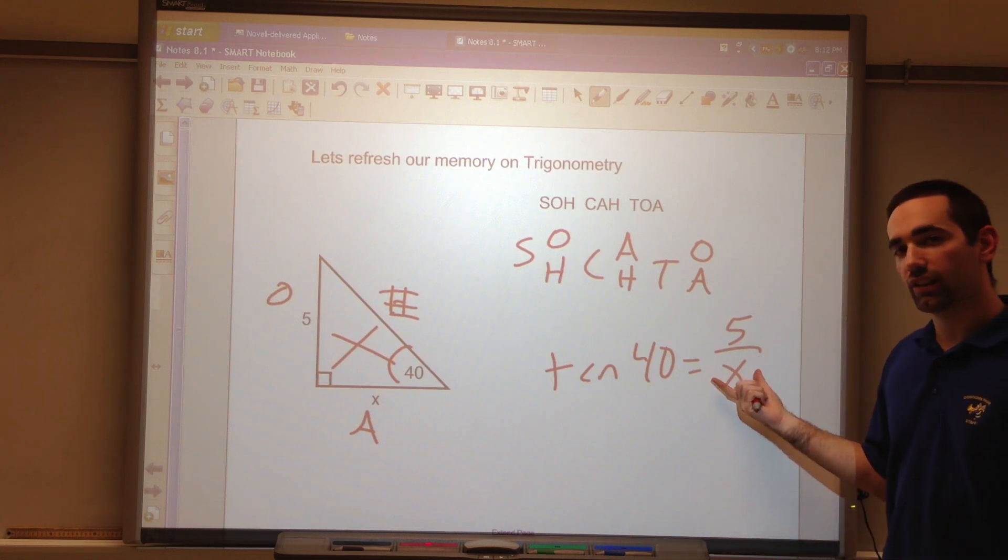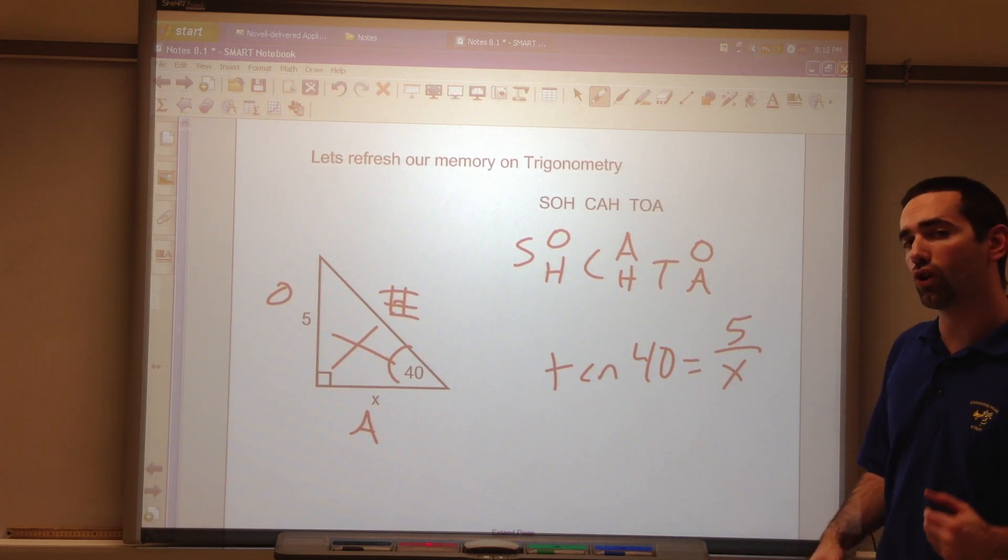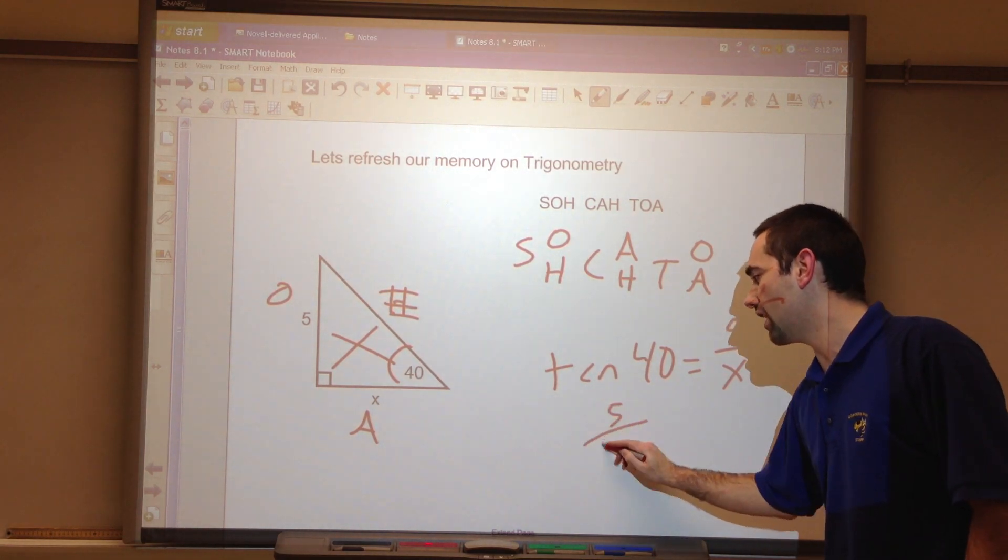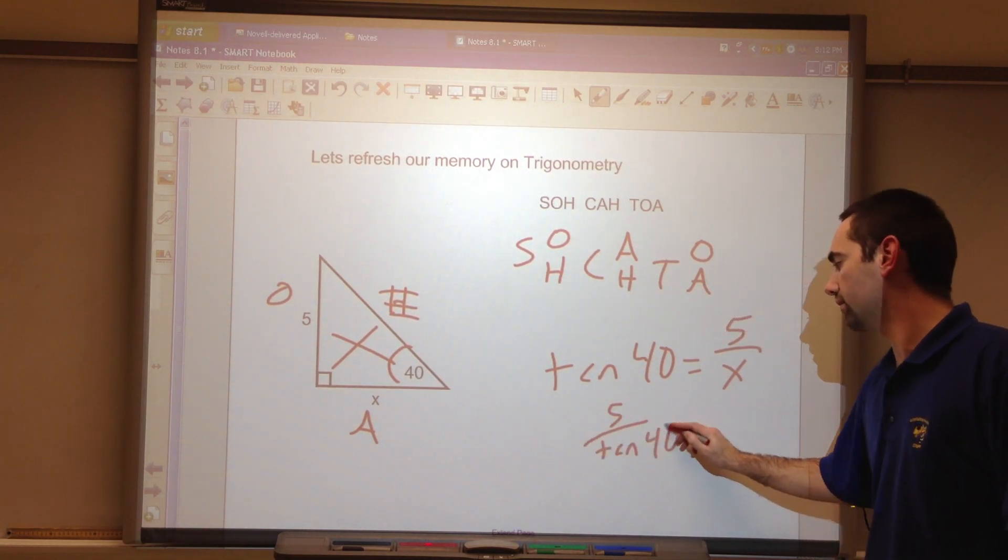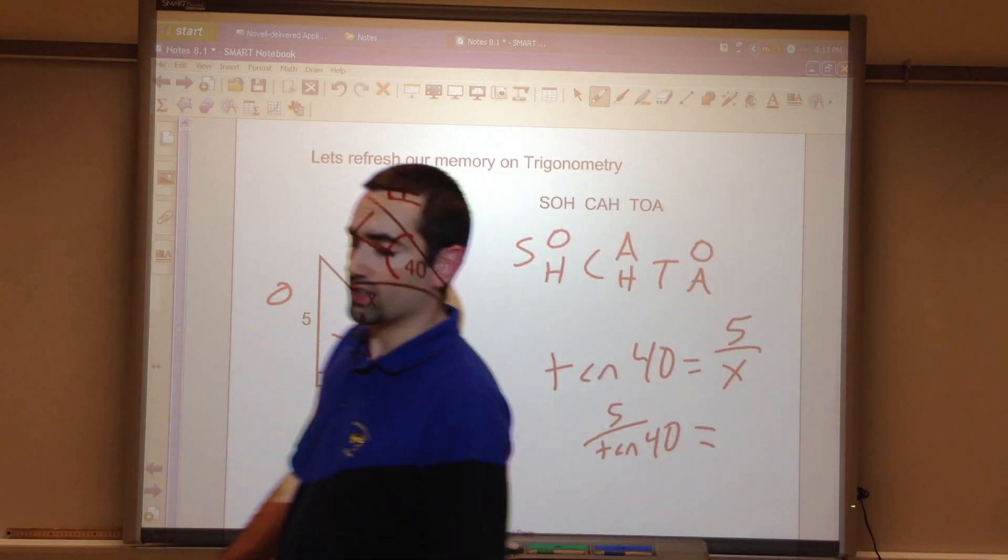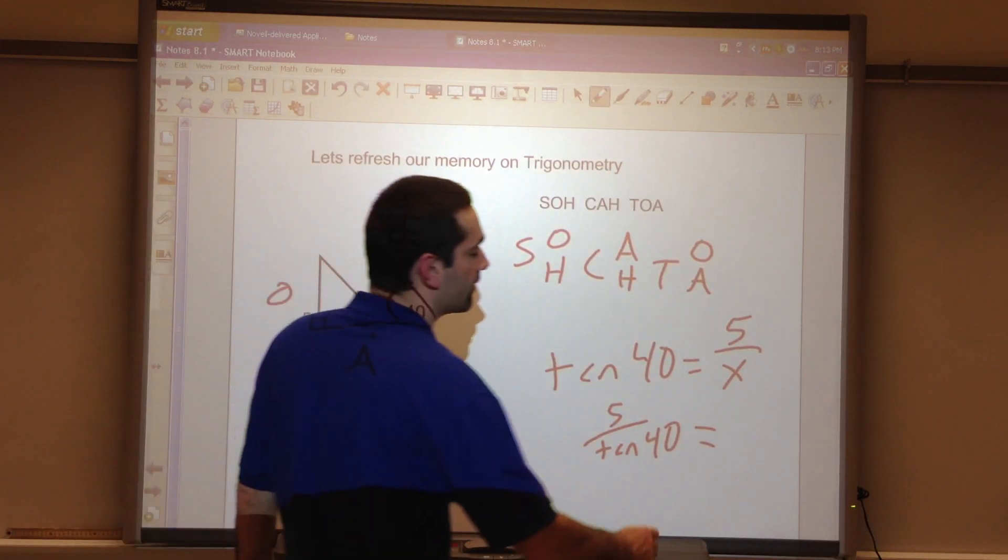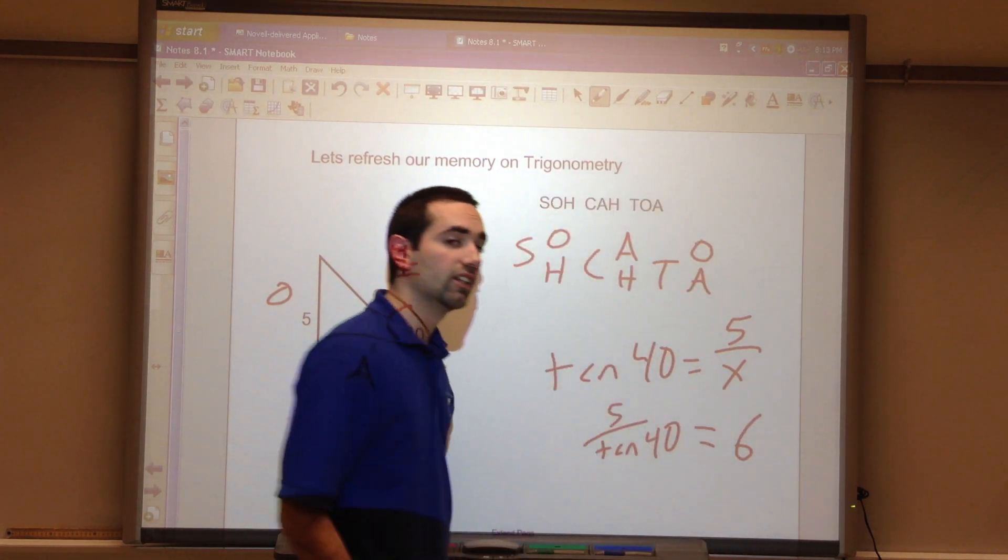Now X is the denominator. So to solve for it, I'm going to divide. I'm going to take 5, divide by tangent 40. 5 divided by tangent 40 is 5.95. I'll round that to 6.